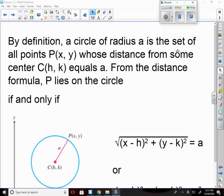From the distance formula, P lies on the circle if and only if the square root of X minus H squared plus Y minus K squared equals A.